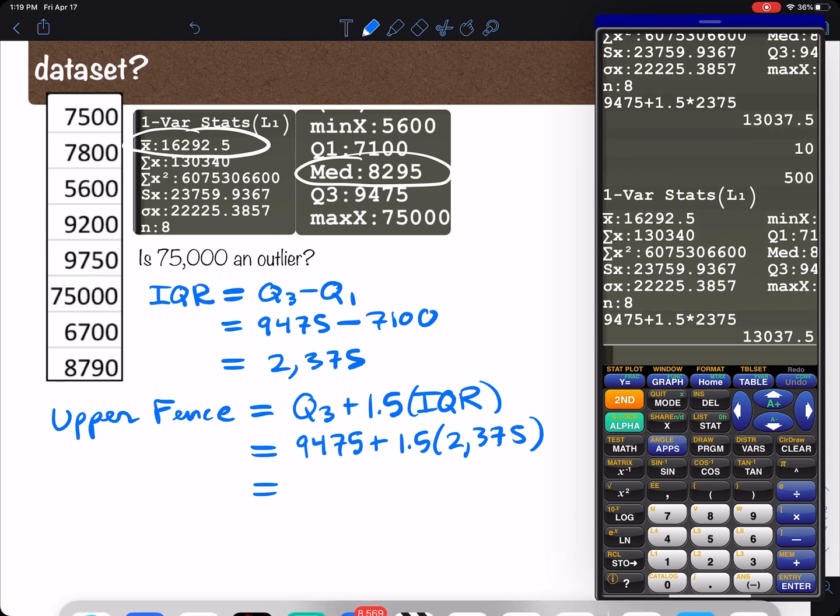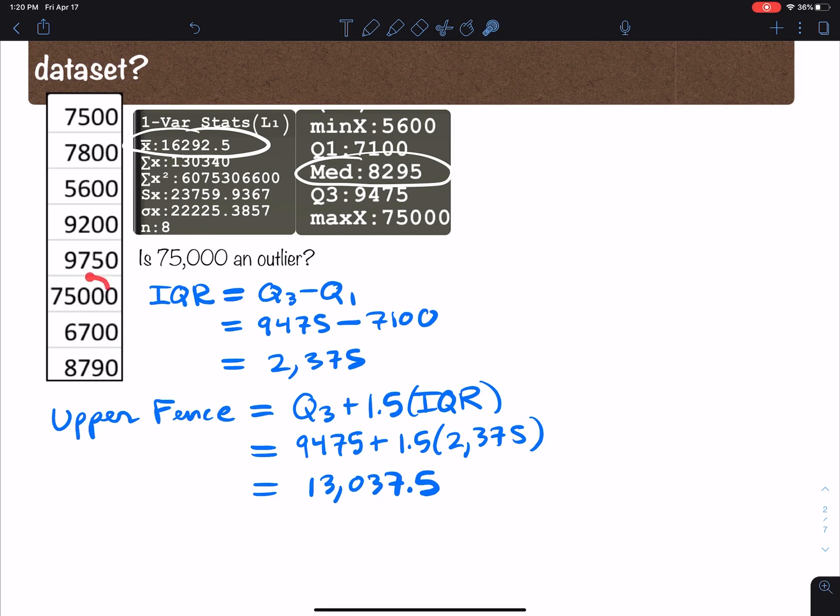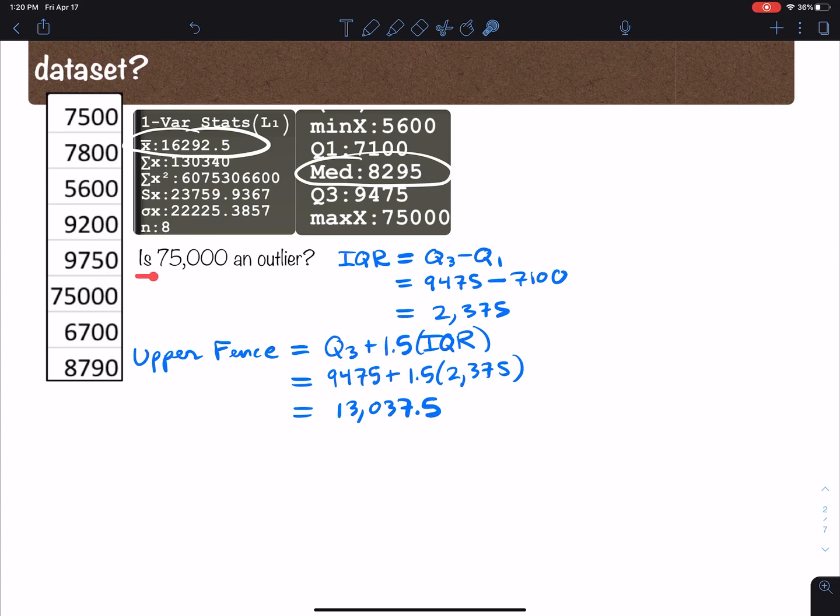So 9475 plus that, what do we get? 13,037.5. So we have overwhelming evidence that 75,000 is an outlier. Let me show you that. So I'm going to answer the question: is 75,000 an outlier and why? Yes, because 75,000 is greater than 13,037.5, which was the upper fence.